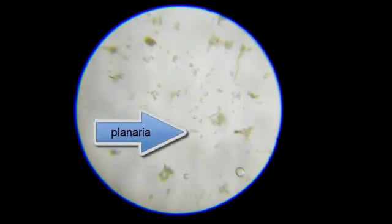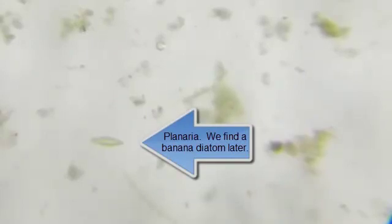Moving very, very slowly. So it could be a planarian. Looks like it. The other thing that has that shape is a diatom, although that's a little too big for a diatom. There are banana diatoms that look like a straightened out banana. But yeah, that's a planarian.